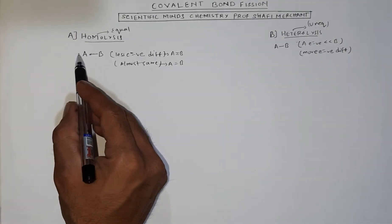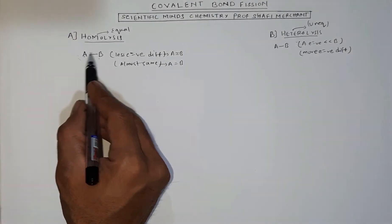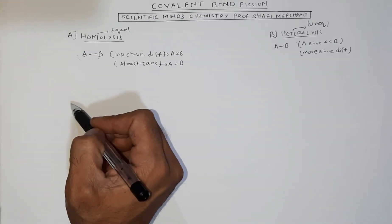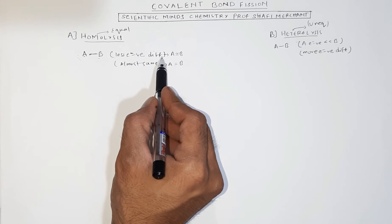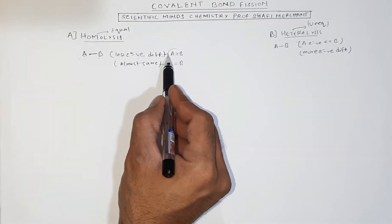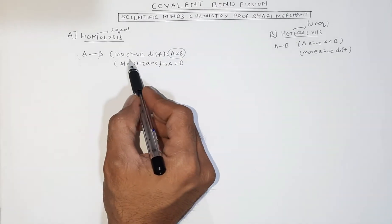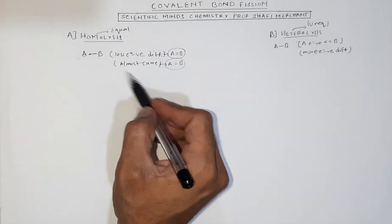Suppose we take a compound AB where A is bonded to B covalently. Both are non-metals, but A and B have very less electronegativity difference. They are almost the same or exactly equal.